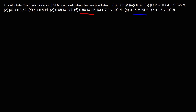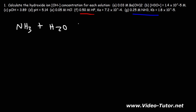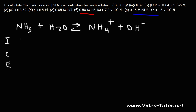Now let's move on to the last part of the problem. We're given the concentration of the weak base NH₃ and the Kb. How can we find the hydroxide ion concentration? Let's write a reaction: ammonia reacts with water. It's a weak base and it's going to partially ionize into NH₄⁺ and hydroxide.